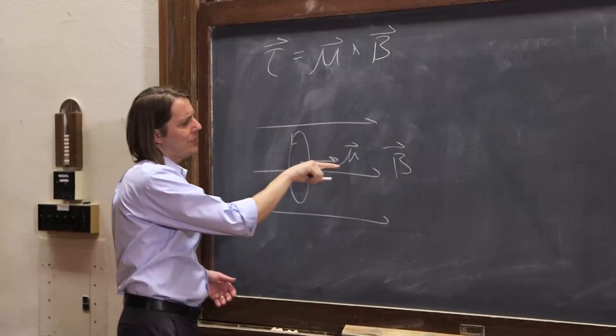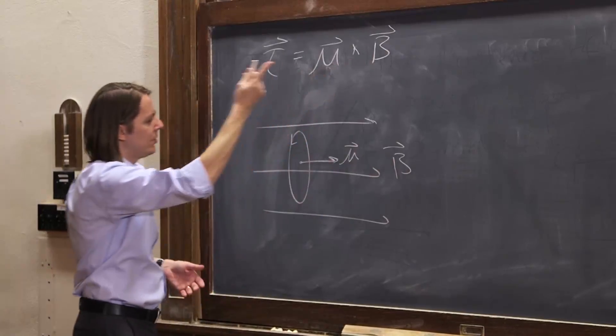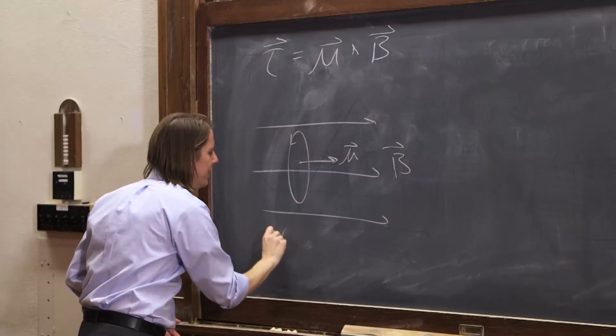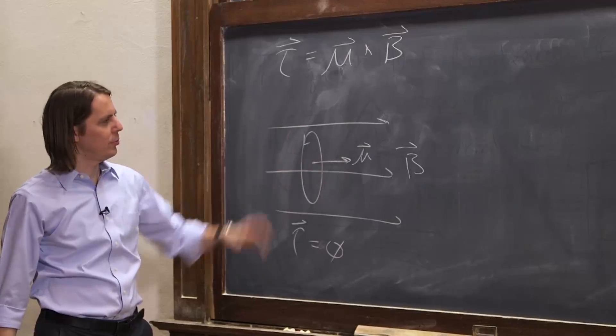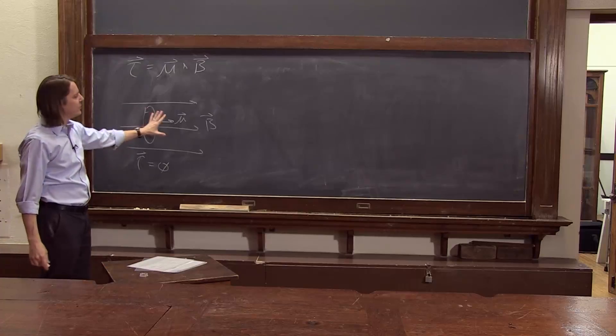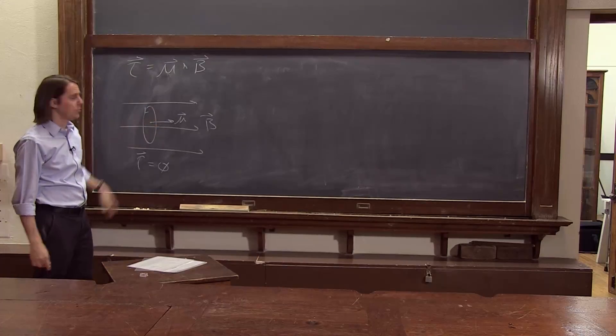Here I have the moment in the same direction as the B field. The cross product is zero. This is the case where you'll have no torque. That's where it's aligned with the B field. This thing likes to be aligned with the B field and doesn't feel any torque in that case.